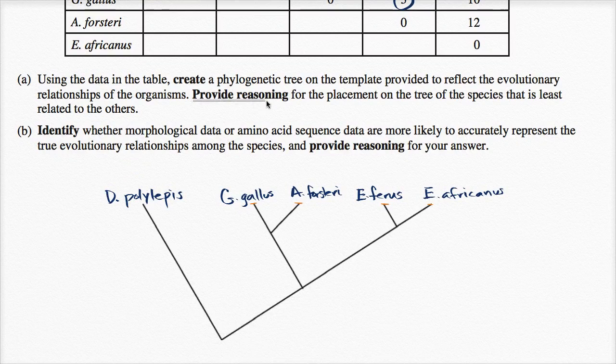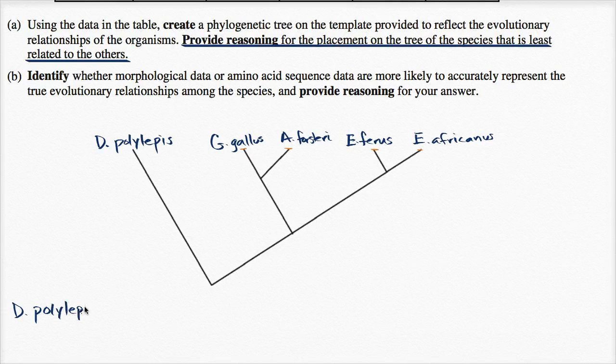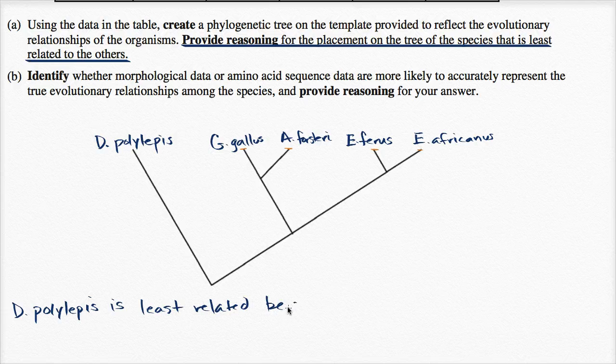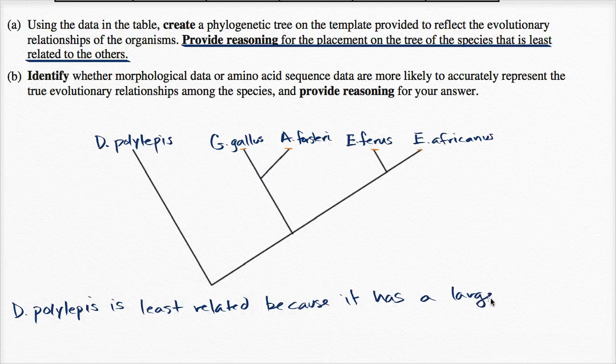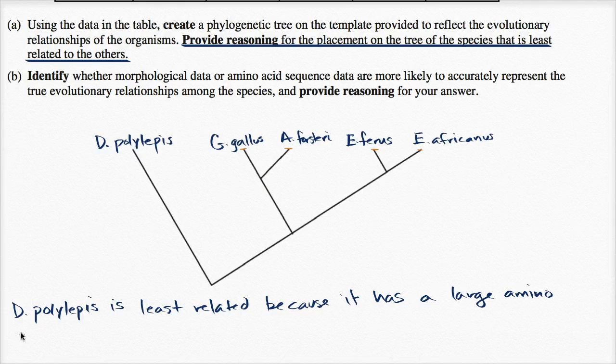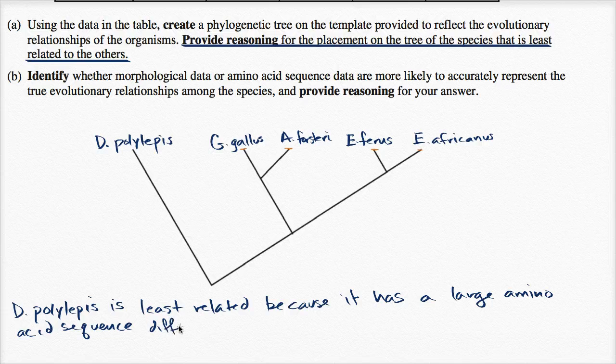And they say, provide reasoning for the placement on the tree of the species that is least related to the others. So, I'll provide the reasoning. So, D. polylepis is least related because it has a large amino acid sequence difference from the other four.